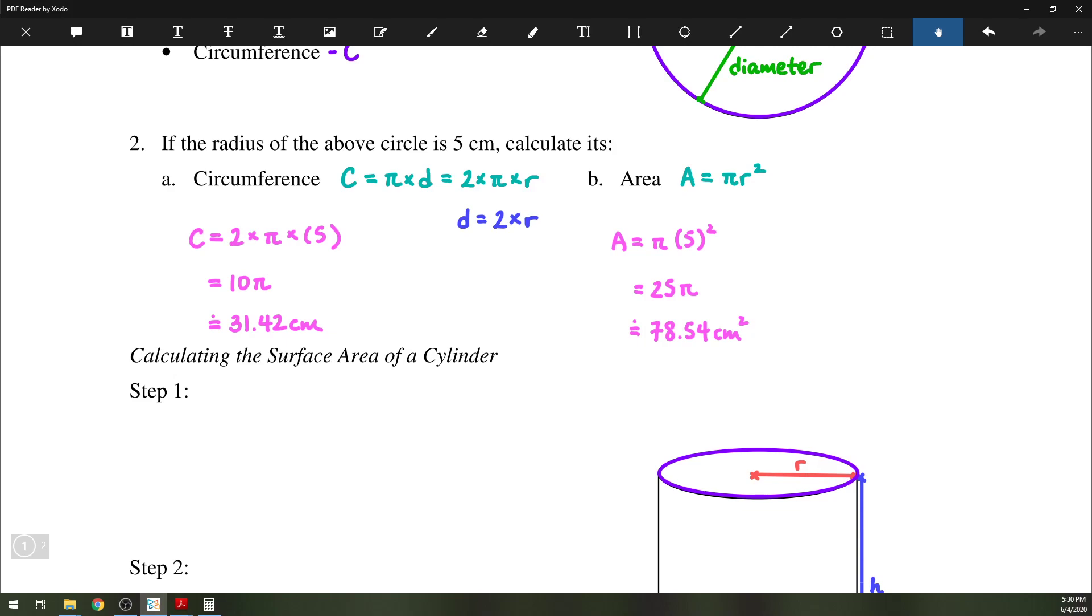Later on, the answers 10 pi and 25 pi will be preferred in some questions, but for right now, we're going to focus on our decimal answers.